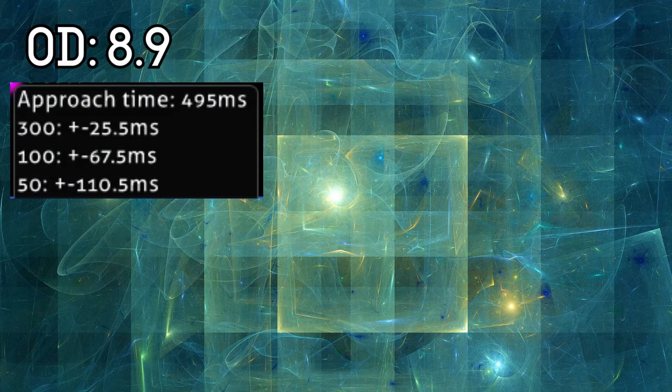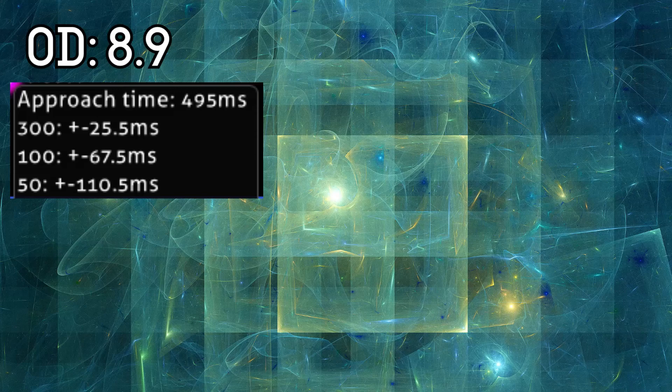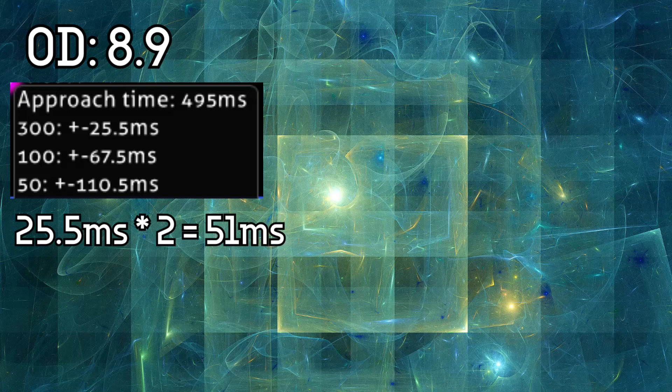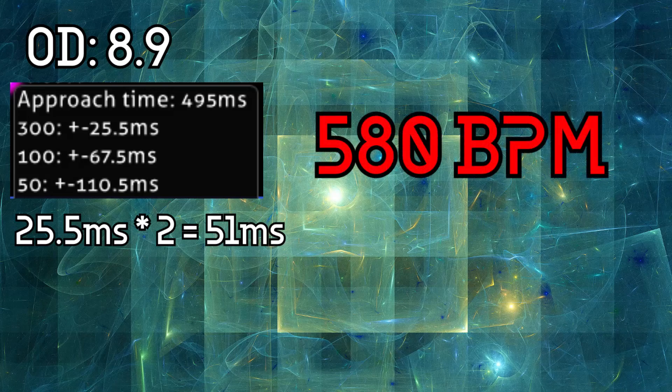So to remind, OD is set to 8.9. It means that in both ways early and late, we have about 51ms to spare. In the end, we'll get the triple at roughly 580 BPM. Just mash it. There's nothing much to say. It's easily assessable. It even has an SS on the leaderboard.